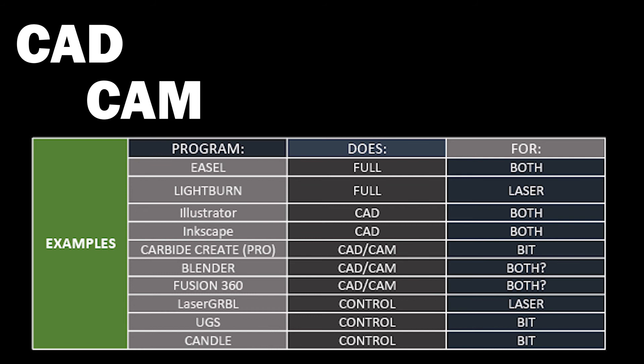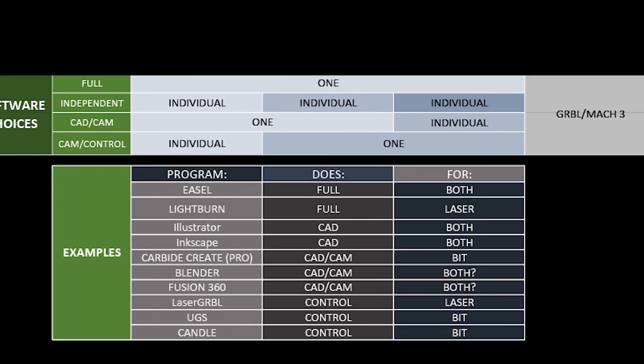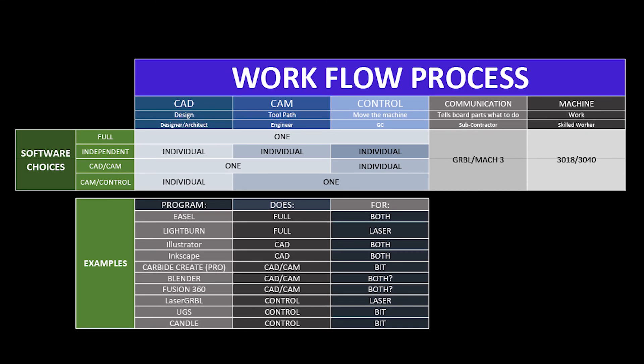Blender and Fusion 360 are kind of like the Inkscape/Illustrator example — Blender being the free open source and Fusion 360 being the paid version. I haven't used Fusion 360 yet; I have used Blender but not the CAD/CAM part of it. Laser GRBL is just a control software and just for laser — you import your files, set your settings, and burn. UGS is another controller, as well as Candle. That's a brief overview of the whole workflow process. There's a lot of different software out there, so explore and find what works for you — that's the most important part.